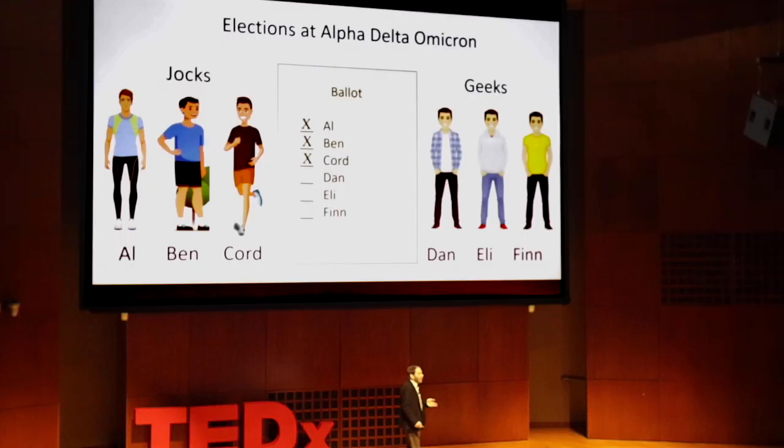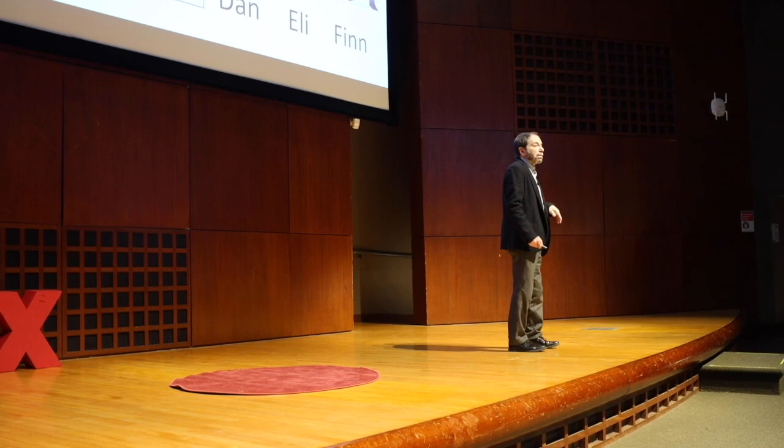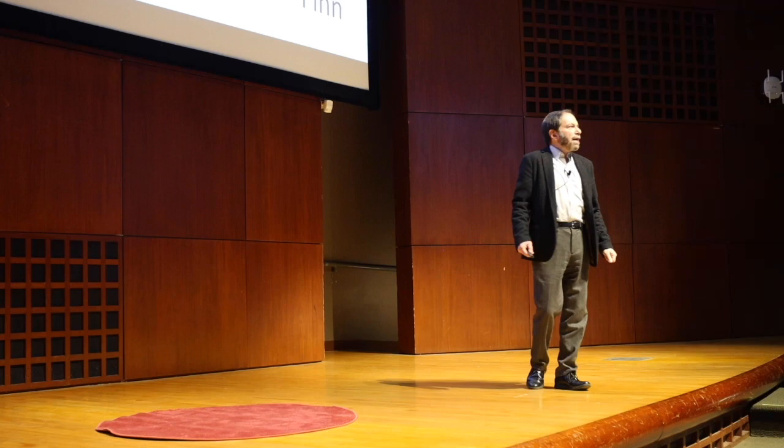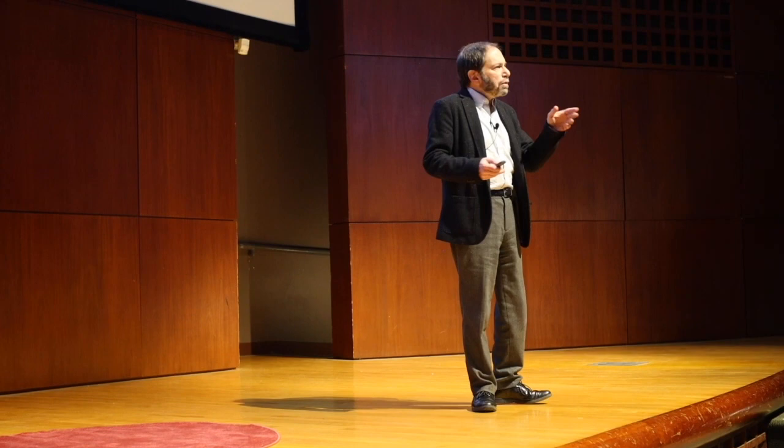One approach might be that we simply have each fraternity member vote for their top three candidates, and then the top three vote-getters are declared the winners. But since a majority of the fraternity members are jocks, it's likely that Al, Ben, and Cord will all win, and none of the geeks will win.